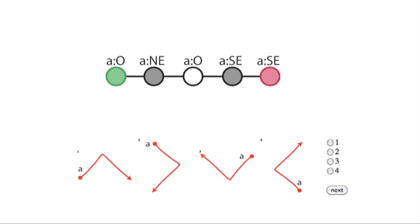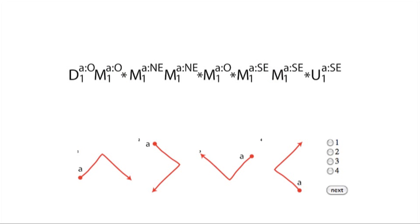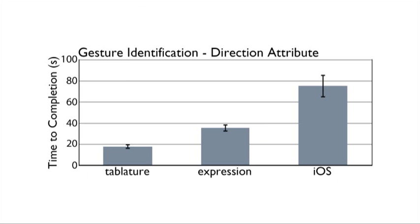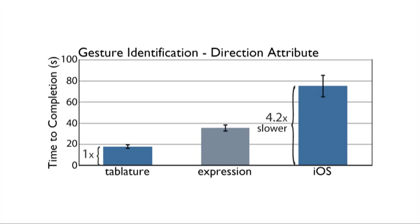In a second task, we asked users to identify gestures with direction attributes. Here, we find that users read tablature the fastest. They were 2 times slower reading expressions, and 4.2 times slower reading event handling code. This suggests that tablature and regular expressions make it easier for developers to read multi-touch gestures.